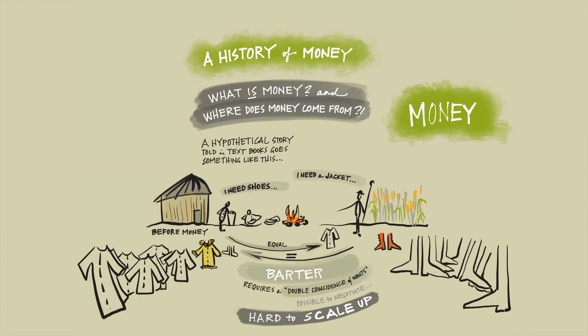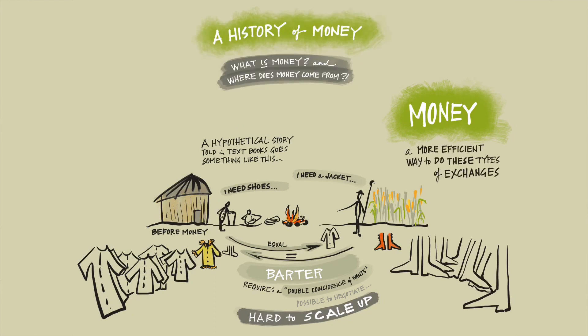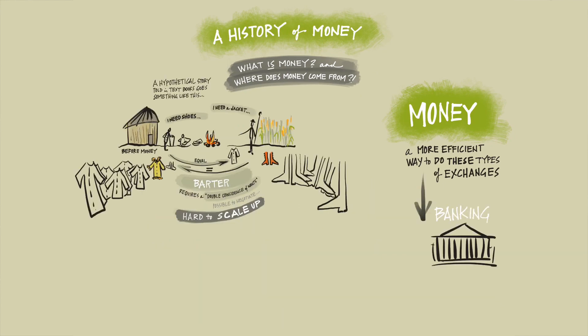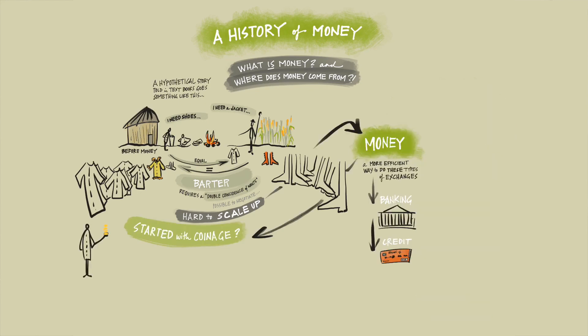This is where money comes into play. The story goes that money came in as a more efficient way to do these exchanges, and in this story money comes first and then eventually banking and credit. Within this school of thought, the history of money is usually a history of coinage, and money starts as a commodity — essentially gold, or salt, or something that has a value in and of itself.